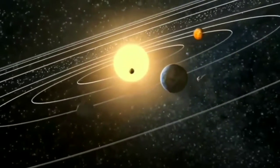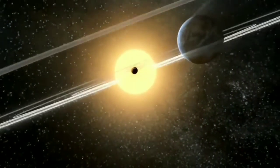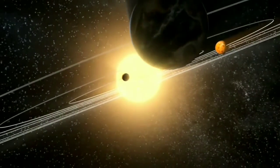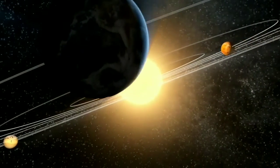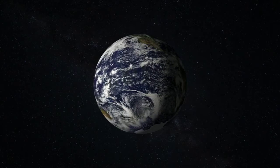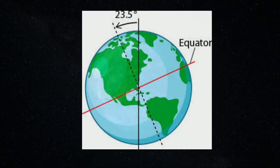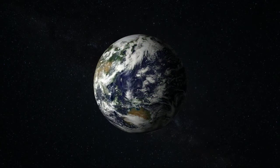Earth orbits the Sun at an average distance of about 150 million km every 365.25 mean solar days. The axial tilt of Earth is approximately 23.43 degrees, with the axis of its orbit plane always pointing towards the celestial poles.